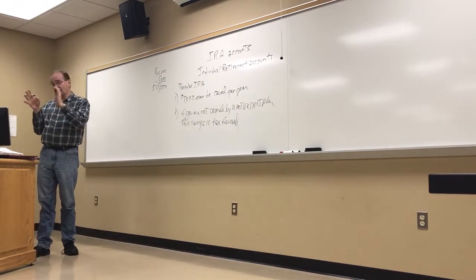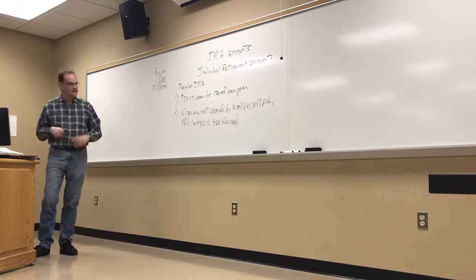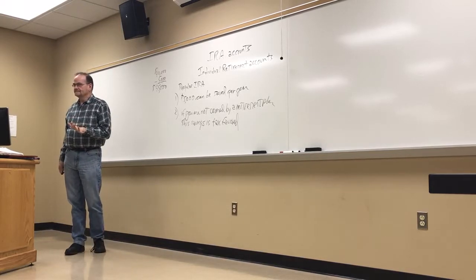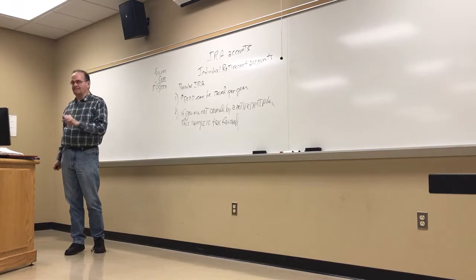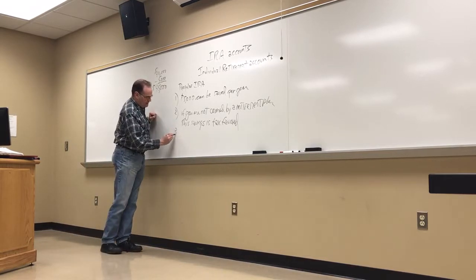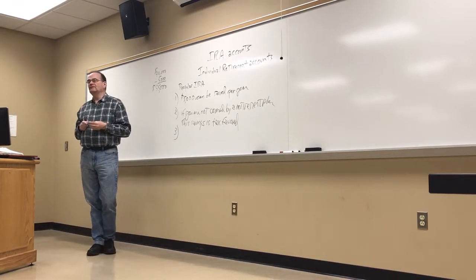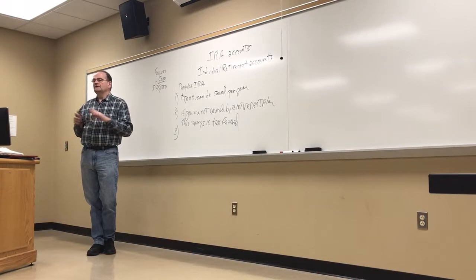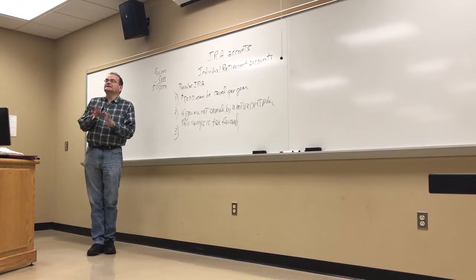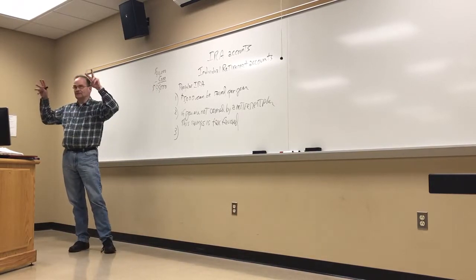And what happens then is you get a big refund back from the IRS because they say, oh look at this, you paid us tax on $40,000 and you should have only paid us tax on $35,000 and we're going to give you back a big refund. That's what we mean here. Is that total per lifetime or is that per year? No, it's just per year. $5,000 can be saved per year.